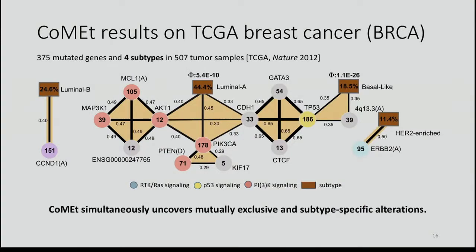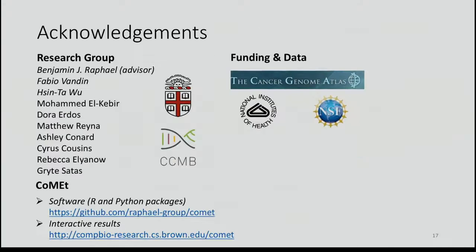We ran COMET on the TCGA breast cancer dataset including four subtypes. In the marginal probability graph output, rectangles represent subtypes, lines connecting genes to rectangles show subtype associations, and circles represent genes. We recover parts of the PI3K signaling pathway, the well-known association between PIK3CA and Luminal A, as well as the well-known ERBB2 and HER2-enriched, and TP53 and basal-like associations.